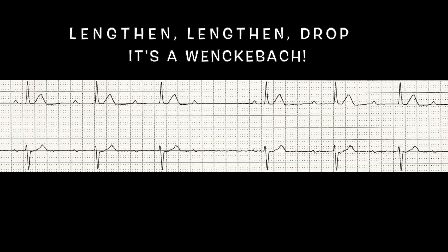Let's look at it on a strip. If you look at your first PR interval, then go to the second PR interval, you'll see that it elongates a little bit. Then you go to the third PR interval and it gets even longer. When you go to the fourth, you notice that an entire QRS is dropped — that's how you know it's a Wenckebach. In medic school they taught us: lengthen, lengthen, drop — it's a Wenckebach. Others say longer, longer, longer, drop — it's a Wenckebach. It's whatever helps you remember.